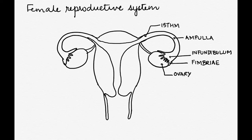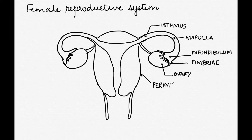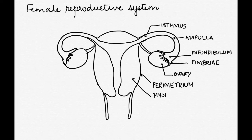It is at this junction that fertilization happens. The uterus has an outermost layer that is called the perimetrium. Next to the perimetrium is a thick muscular layer that is called the myometrium.